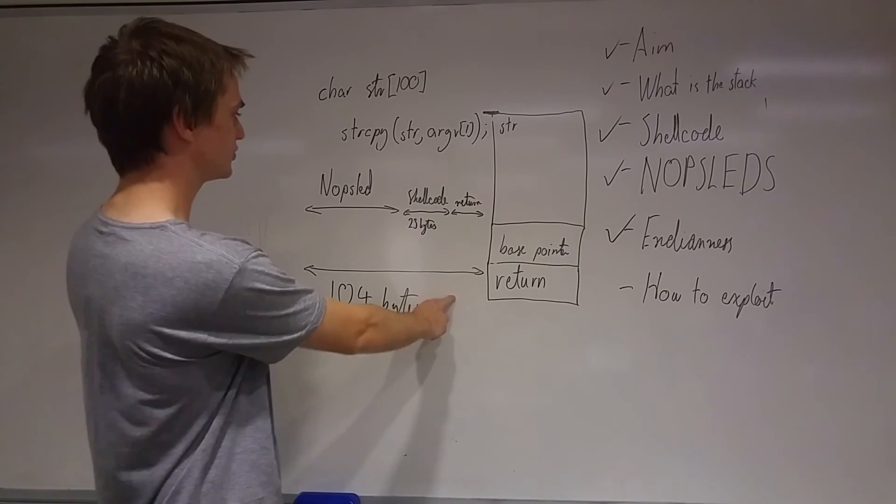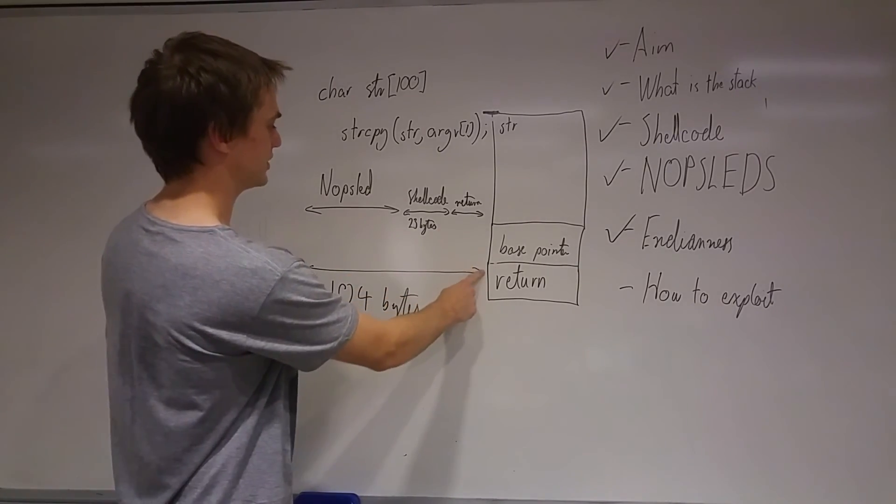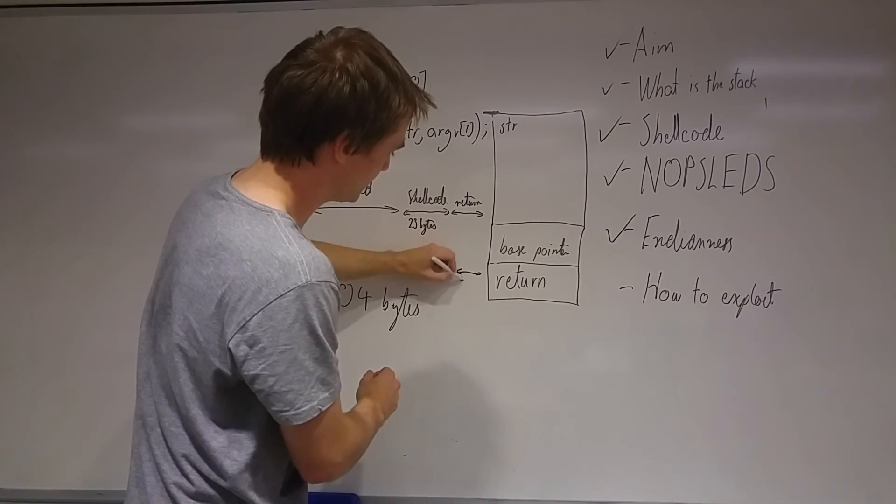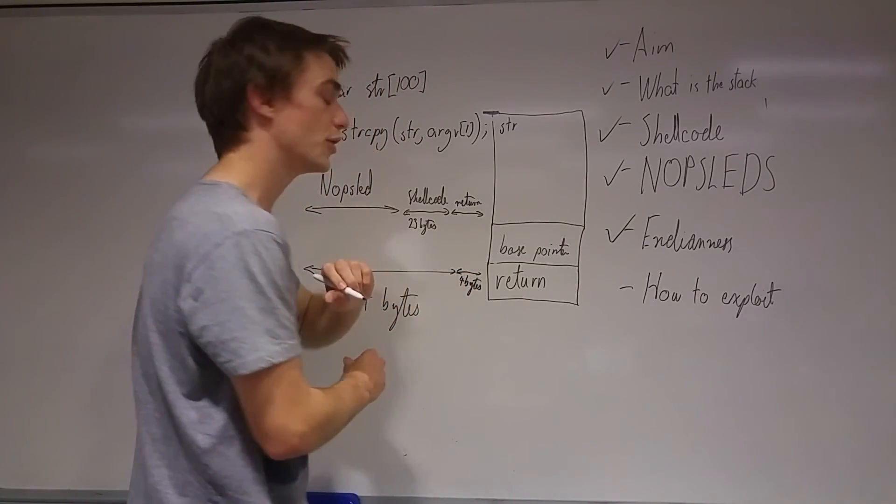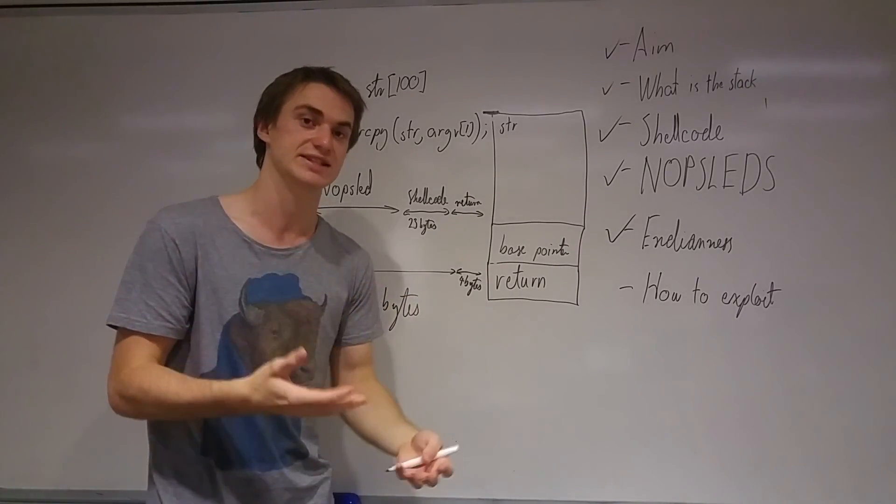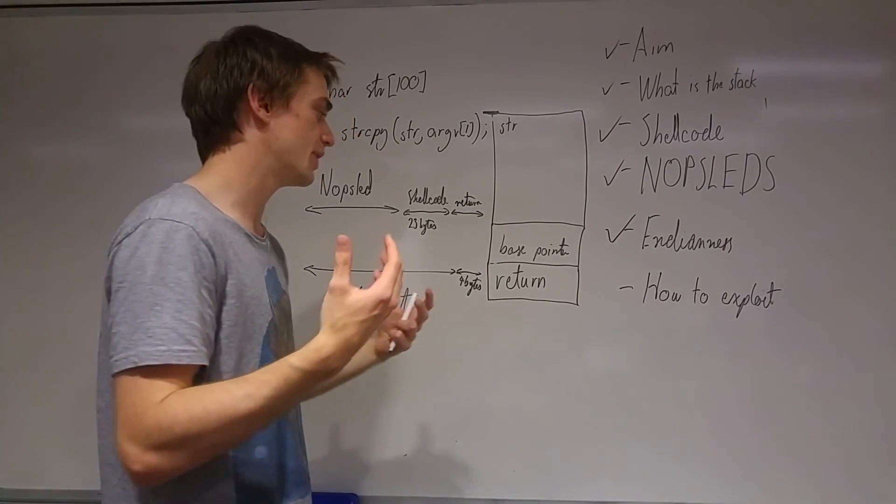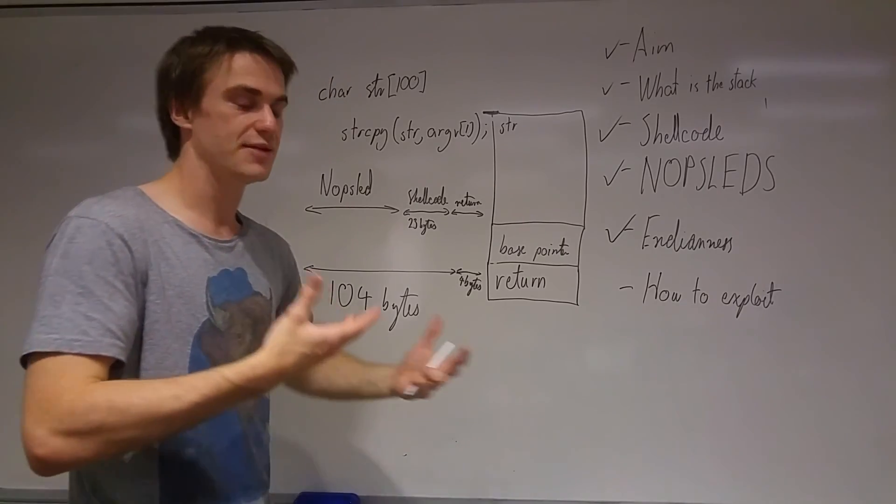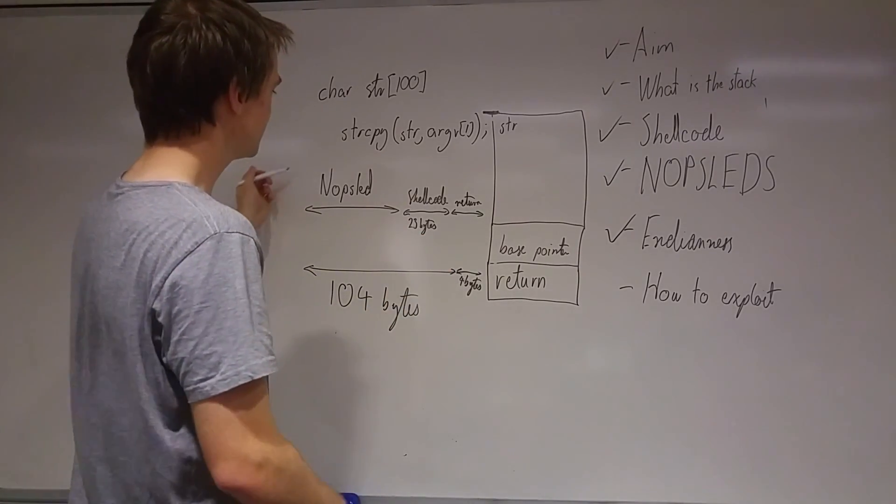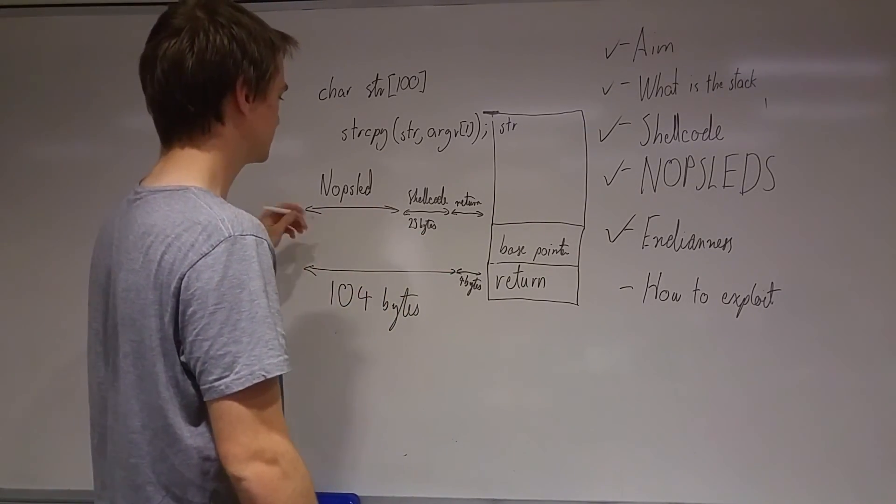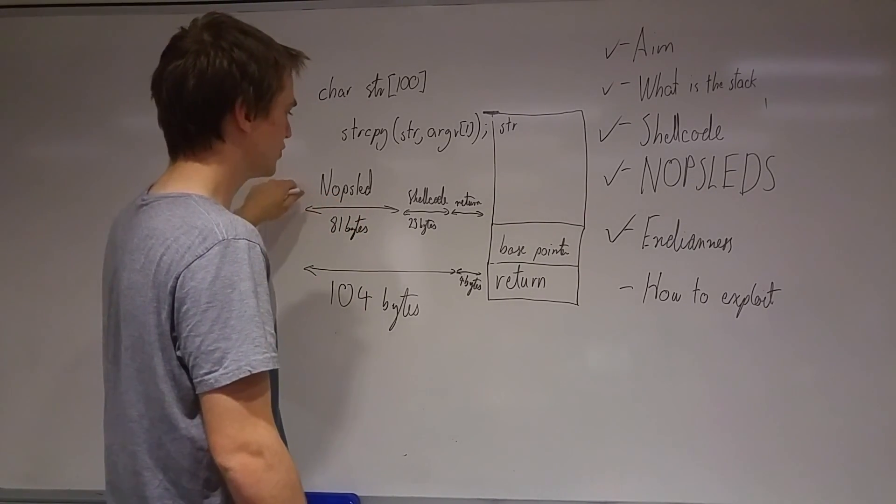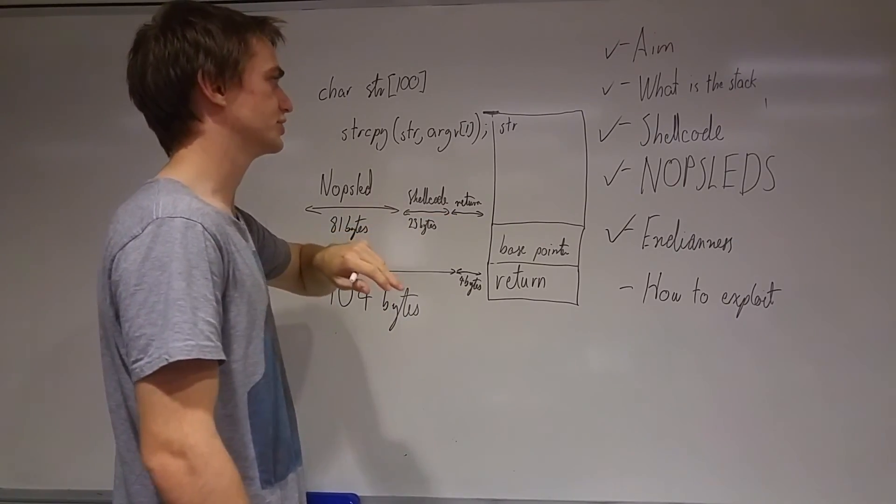And then because we've got 104 bytes here... Oops, that should be before our return address. So then our return address is 4 bytes here. Sorry, I should have said earlier, it's 4 bytes because we're working on 32-bit architecture in this example. 64-bit's a little bit different but it's basically doing the same thing just with slightly different variable sizes. So we've got 104 bytes to play with here. Basically the nop sled can be 104 minus 23. We're going to have 81 bytes of nop sled, 23 bytes of shellcode, then we're going to have the return address.